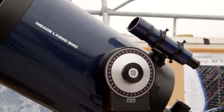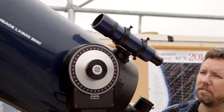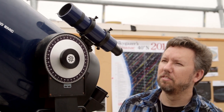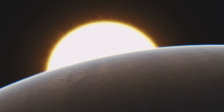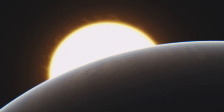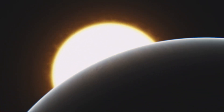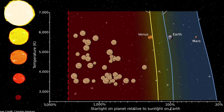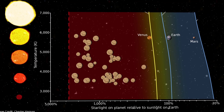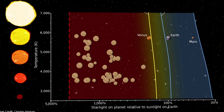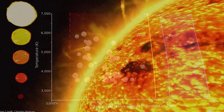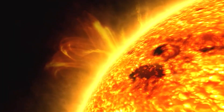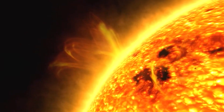The boundaries of the Venus zone are mostly determined — in fact almost completely determined — by the properties of the star. One thing to think about is that Venus is about 25 percent closer to the Sun than the Earth, but it receives almost twice the amount of flux, or twice the amount of solar energy, that the Earth receives.